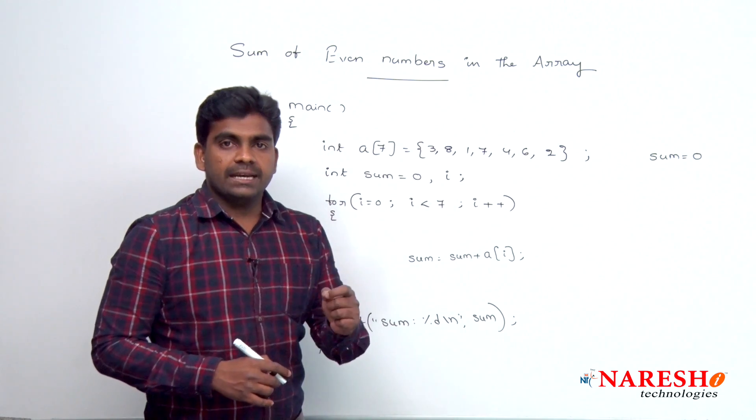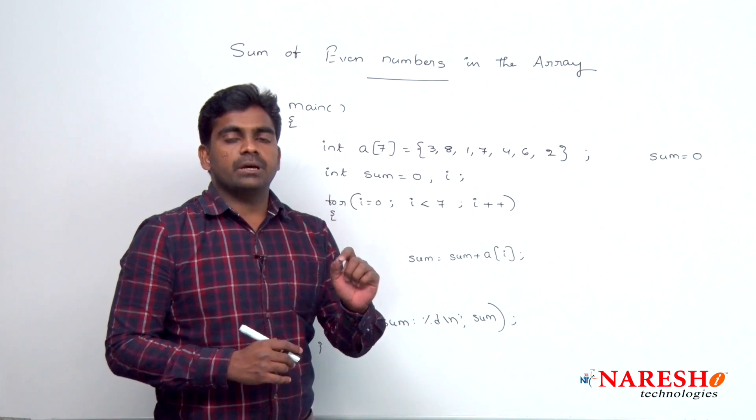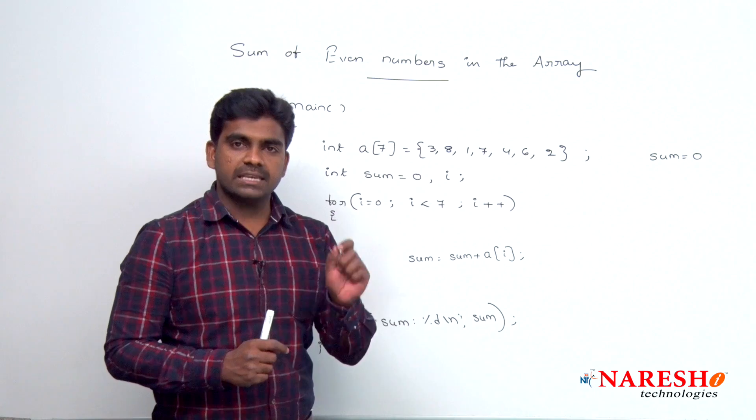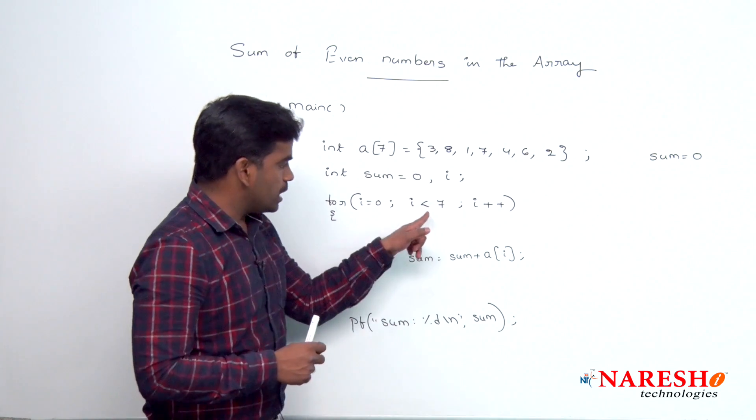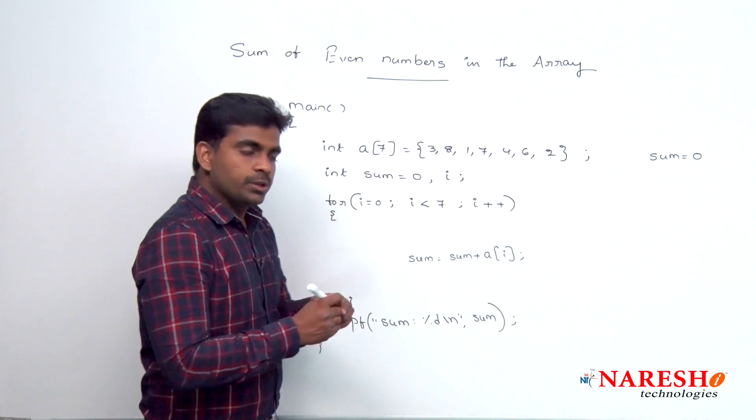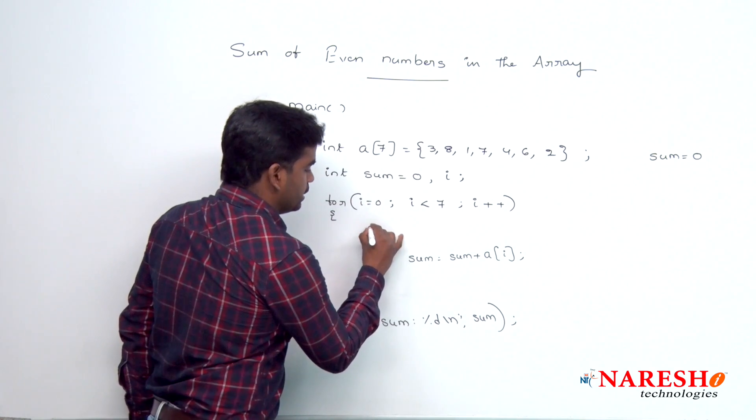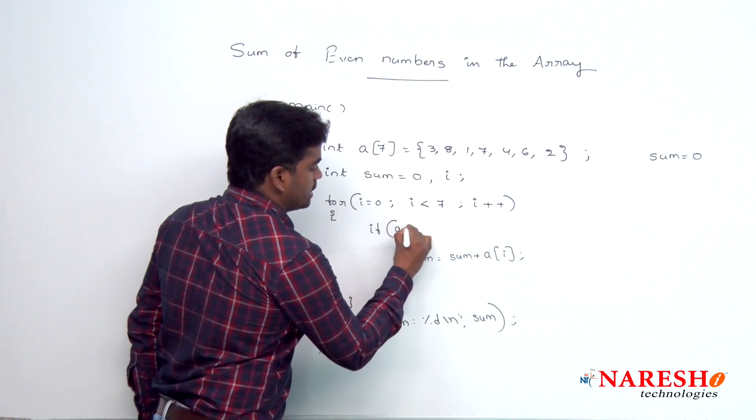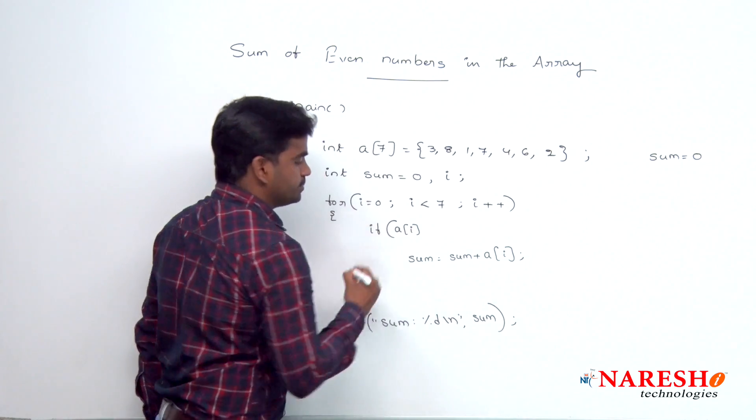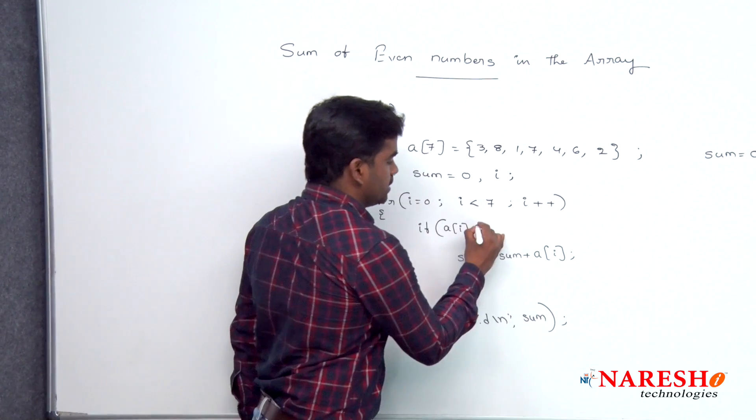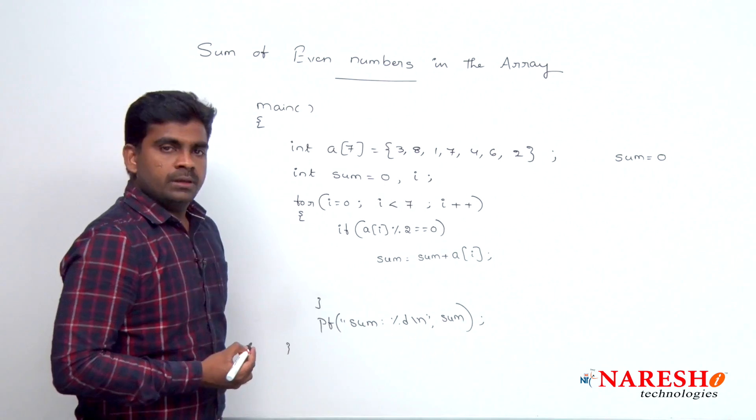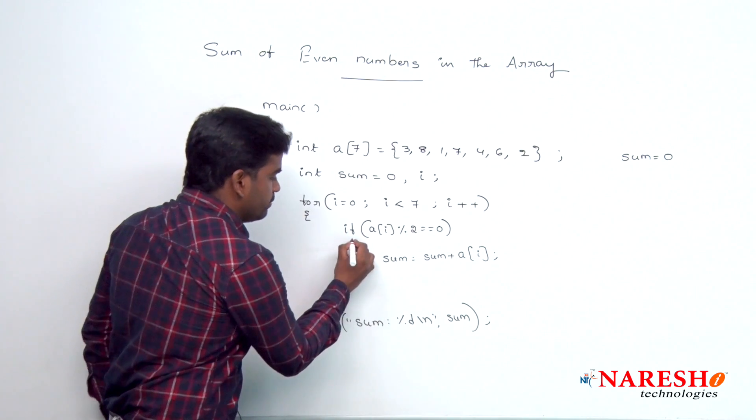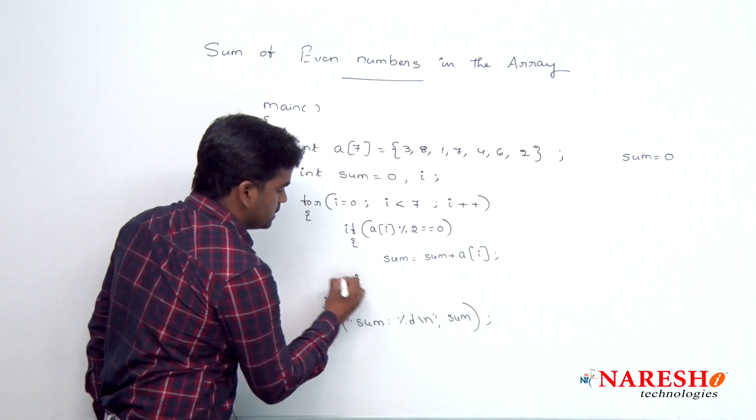But now, we are going to check the number is an even number or not. If it is even number, then only we are adding to the sum. So, whenever the control comes inside, using one if block, if that number is nothing but a of i, a of i is divisible by 2 or not, we are checking. If it is divisible by 2, then only we are adding to sum.